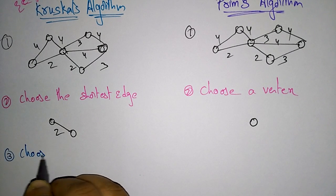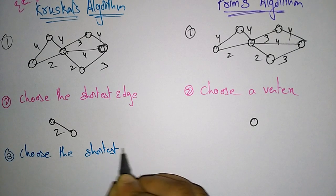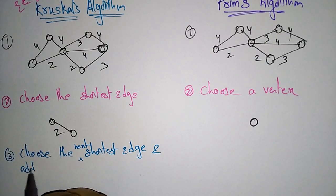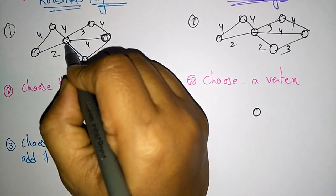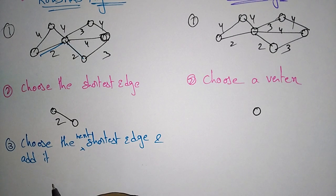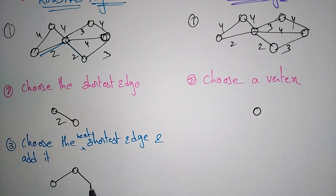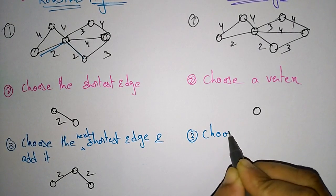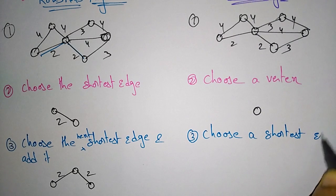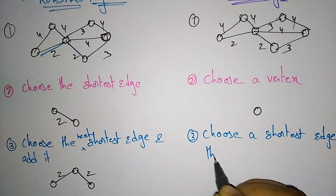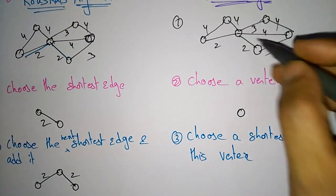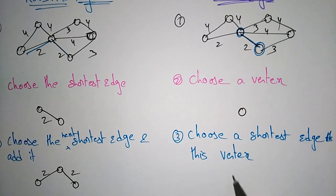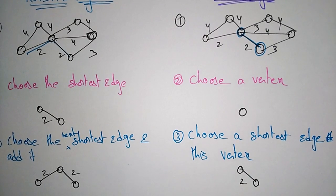Third step: choose the shortest edge and add it. What is the next shortest edge? Just add that. The next shortest edges give us weights 2, 2. Here in Prim's, I have first chosen a vertex. Now I have to choose the shortest edge adjacent to this vertex. I am selecting this one — two vertices are now connected. This is the second step.